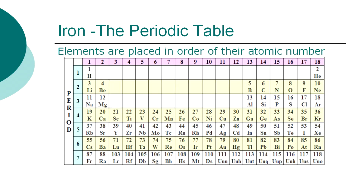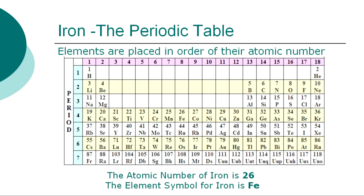Atomic numbers increase as you move across a row, called a group, or down a column, called a period. The atomic number of iron is 26. The element symbol for iron is Fe.